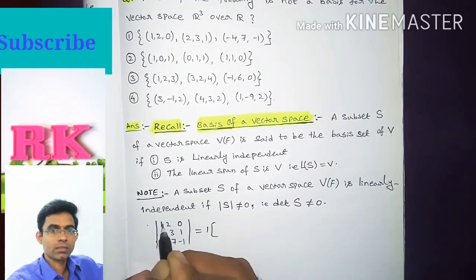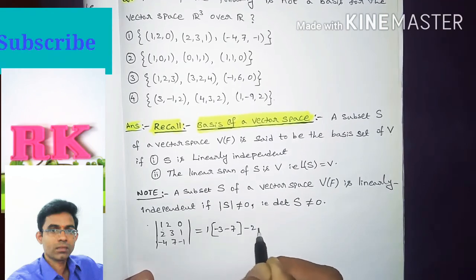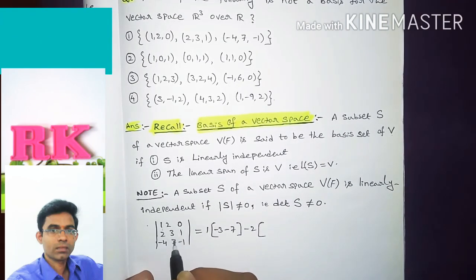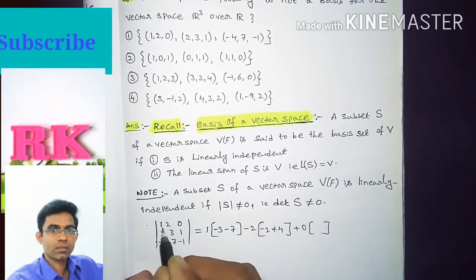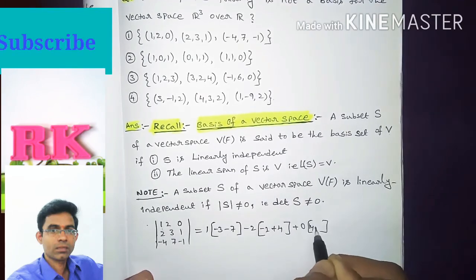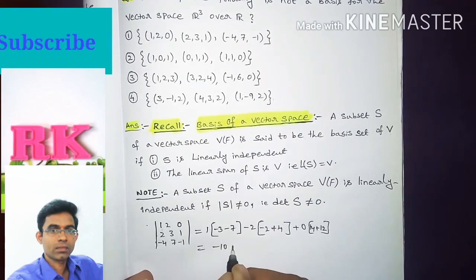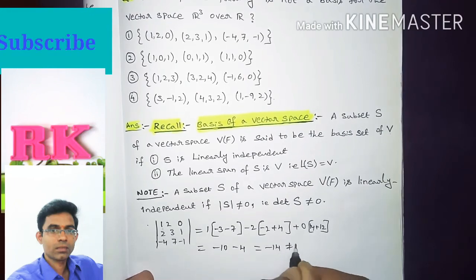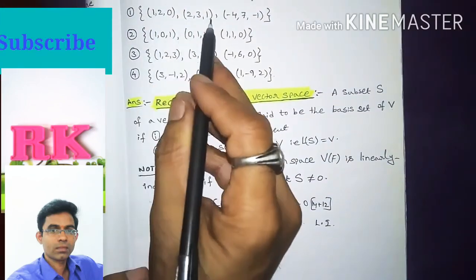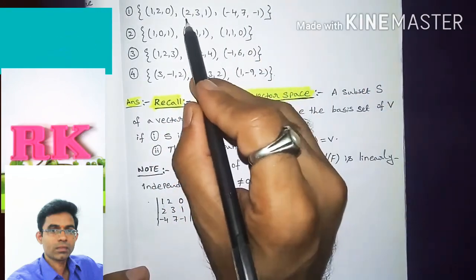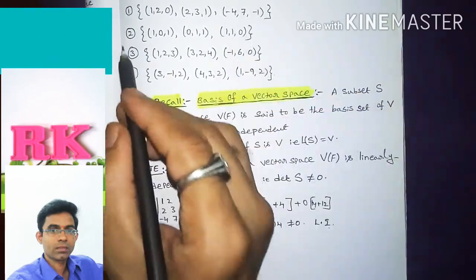Expanding the determinant: 1×(3×(-1) − 1×7) − 2×(2×(-1) − 1×(-4)) + 0×(2×7 − 3×(-4)). This gives 1×(-3−7) − 2×(-2+4) + 0, which equals -10 − 4 = -14. Since -14 ≠ 0, the set is linearly independent, so Option 1 forms a basis for R³. Option 1 is not the answer.